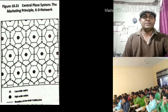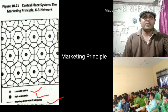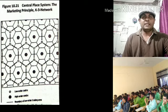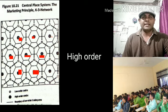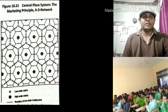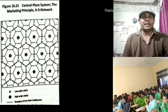It may be observed from this figure that a higher-order center serves three lower-order centers, and each lower-order center surrounding it is itself a lower-order center. Note that the higher-order center includes all the functions of the lower-order center. Under the K=3 network, the number of hexagons in each tier is 1, 2, 6, 18, 54, 162, and 486.